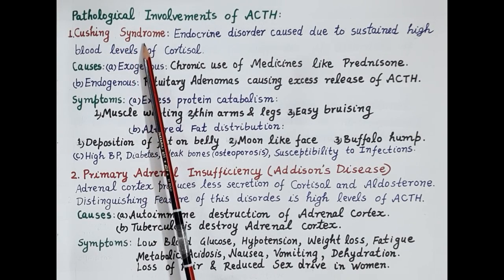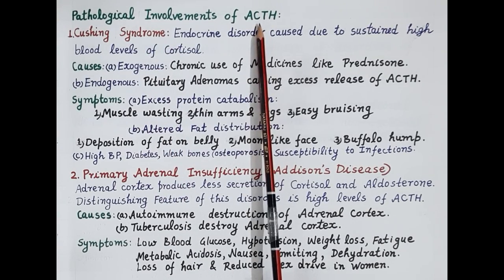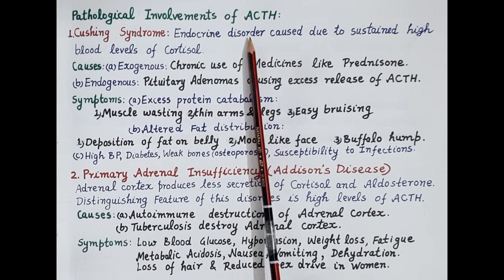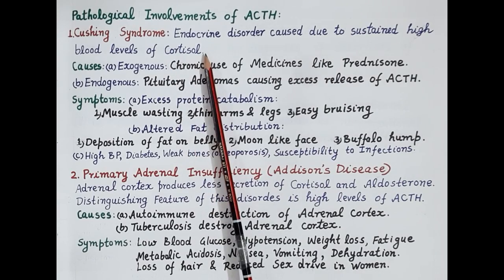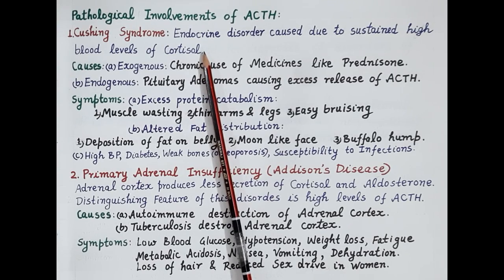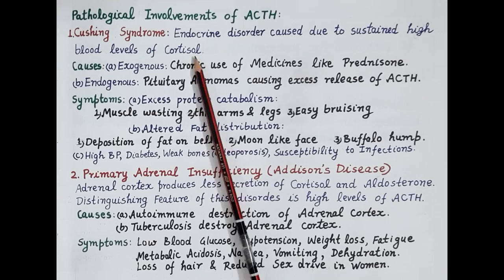Now let's study the pathological involvements of ACTH. First, we are going to study Cushing syndrome. ACTH stimulates the adrenal cortex to release glucocorticoids, and one of the main glucocorticoids is cortisol. Cushing syndrome is an endocrine disorder caused due to sustained high levels of cortisol in the blood — meaning the levels of cortisol remain high for a very long period of time.